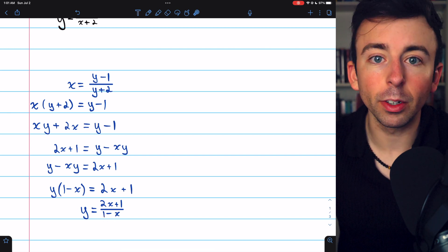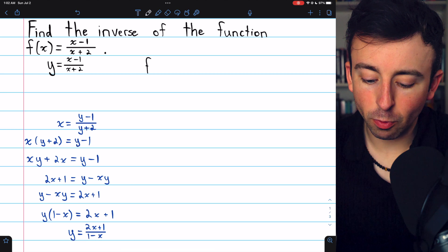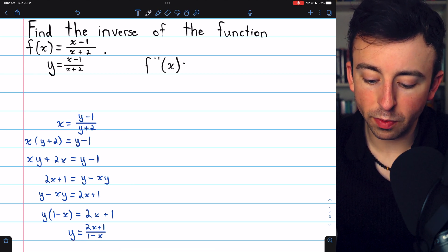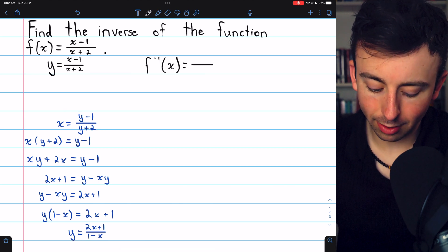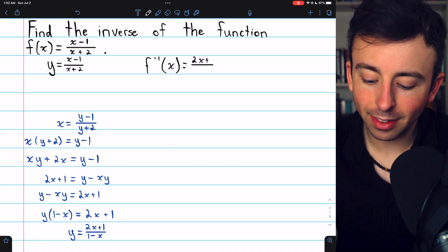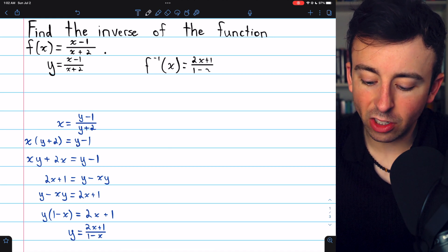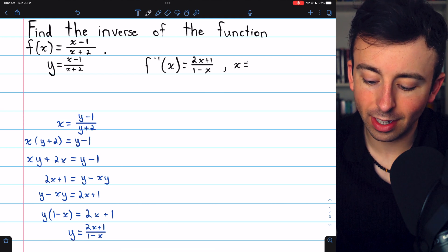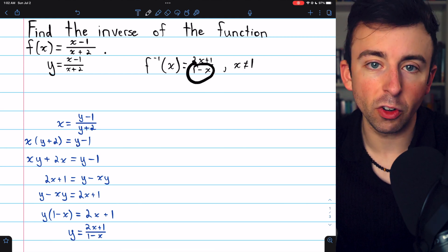And that's our inverse function. We can go ahead and write that up here, f inverse. The inverse function, which we've just found, turns out to be 2x plus one divided by one minus x. With, of course, the domain restriction that x cannot equal one since we can't have a division by zero.